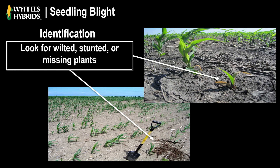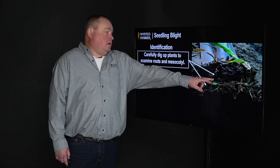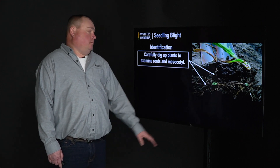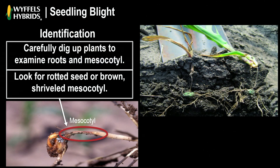When identifying seedling blight, the main thing is to look for missing plants — as you can see in this picture — or stunted, wilted plants that are getting ready to die. When you find those, get a shovel and dig them up. The first thing you want to look for is the mesocotyl — the stem between the seed and your crown — and look for that to be rotted or shriveled up. Also look at your roots, as you can often see rotted roots. There's another picture here showing a zoomed-in mesocotyl that's rotted, with visible pathogen damage on the corn seedling.